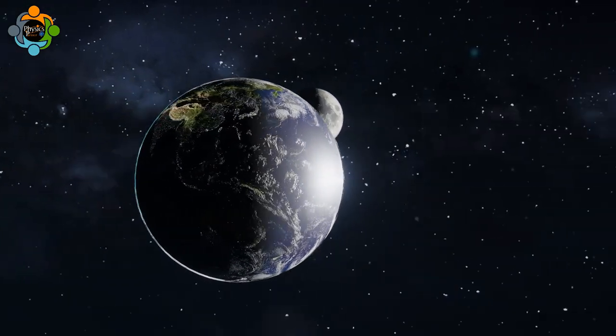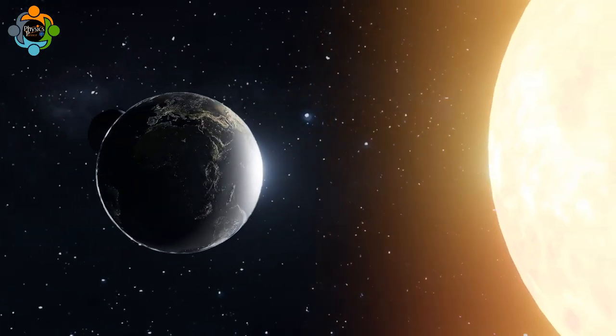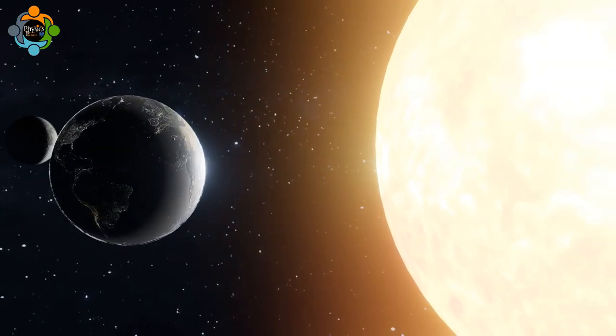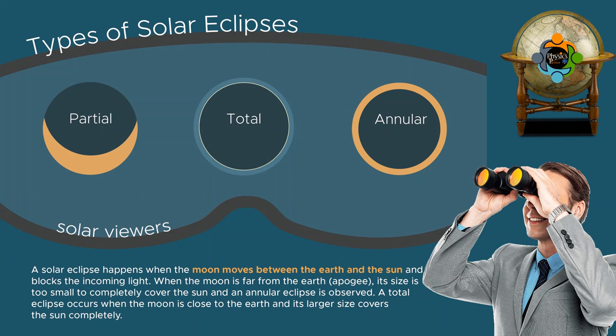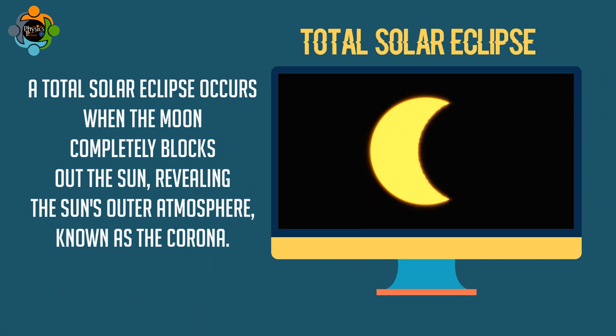The alignment of the sun, moon, and earth must be precise for a solar eclipse to occur, making it a rare and magical event. There are three main types of solar eclipses: total, partial, and annular. A total solar eclipse occurs when the moon completely blocks out the sun, revealing the sun's outer atmosphere known as the corona.